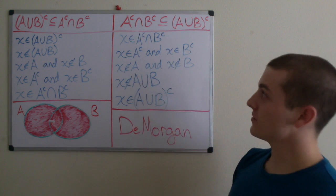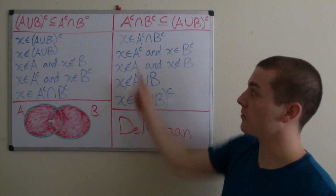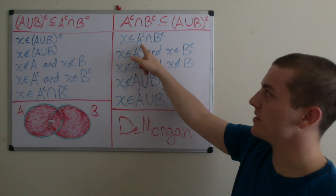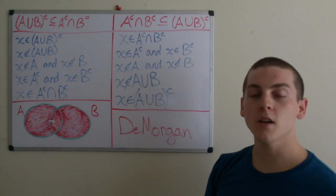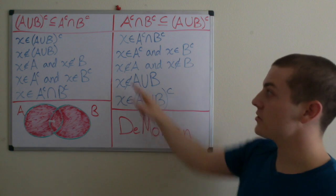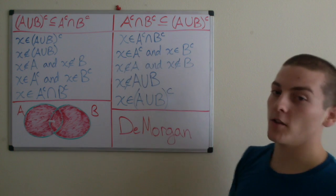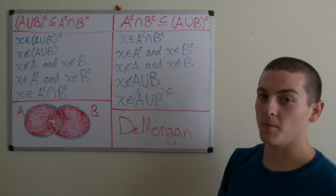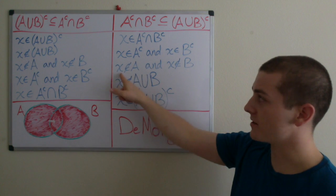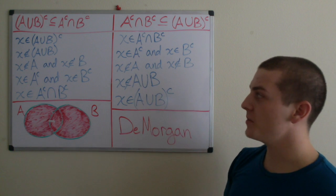So if we go to the other side, we start by saying: suppose that x is an element of A complement intersection B complement. Then by definition, x is an element of A complement and x is an element of B complement. By definition of the complements, x is not an element of A and x is not an element of B.